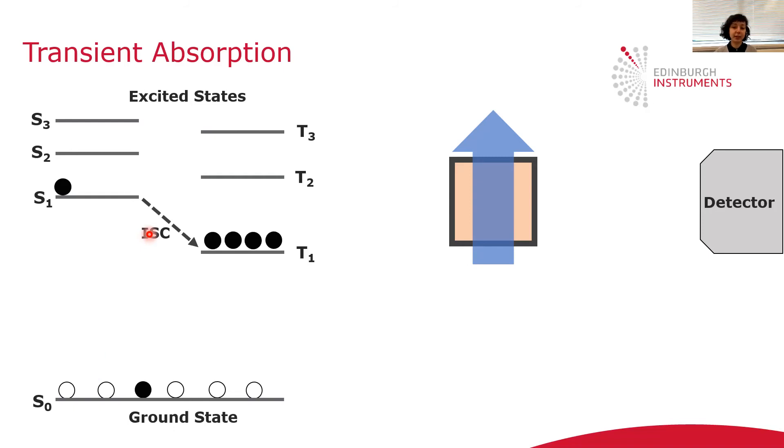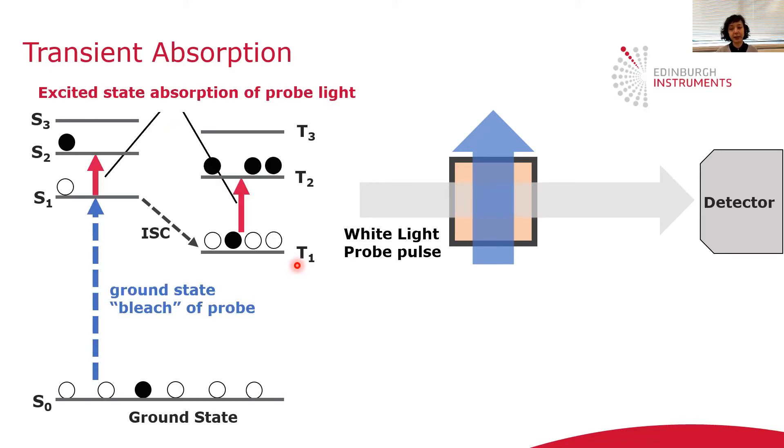After some time, this excited population relaxes through inter-system crossing, which creates a triplet population. And as the system relaxes, we can probe it with a white light pulse. The white light pulse will give you the absorption of the sample, and you can see they change as a function of time.